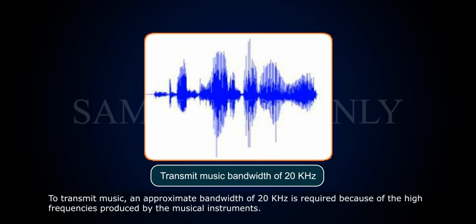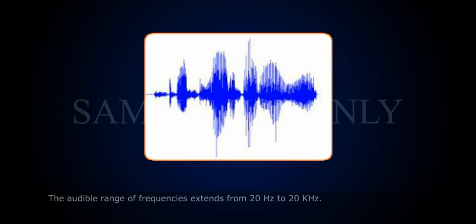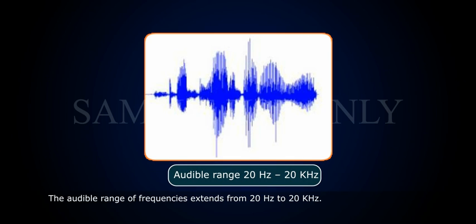To transmit music, an approximate bandwidth of 20 kHz is required because of the high frequencies produced by the musical instruments. The audible range of frequencies extends from 20 Hz to 20 kHz.